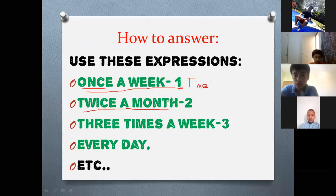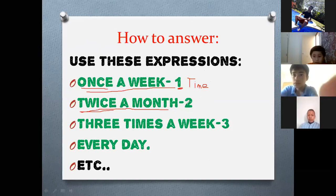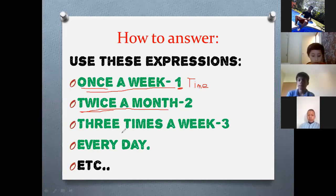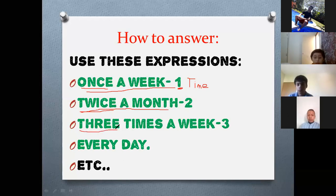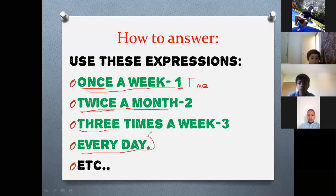'Twice' means two times, so you say 'twice a week,' not 'two times a week.' From three times onward — three, four, five, six, seven times — you can use the normal numbers: 'three times a week,' 'four times a week,' etc. The general expression is 'every day' — Monday, Tuesday, Wednesday, et cetera.